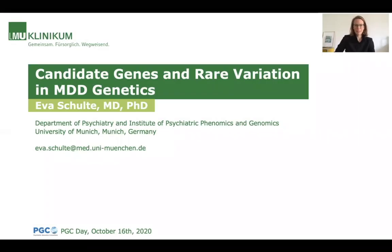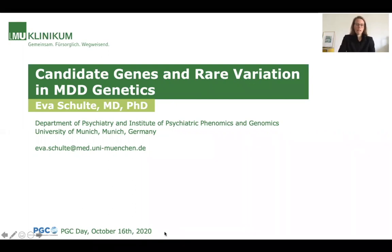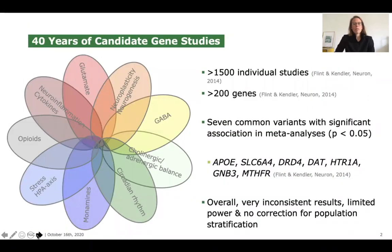Good morning, good afternoon, and good evening. My name is Eva Schulte, and I work at the Department of Psychiatry and the Institute of Psychiatric Phenomics and Genomics at the University of Munich. I would like to tell you about candidate genes and rare variation in MDD genetics. Ever since people discovered the heritable component to MDD, they set out to identify that genetic component. Over the course of 40 years, more than 1,500 individual studies and more than 200 genes were assessed. Candidate genes belong to pathways considered either biologically plausible or implicated in drugs used to treat MDD.